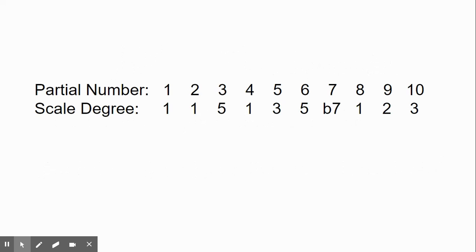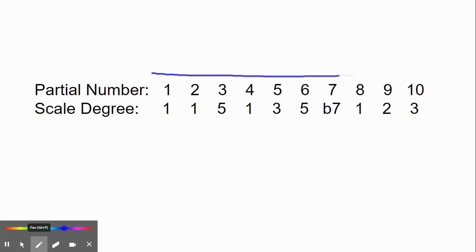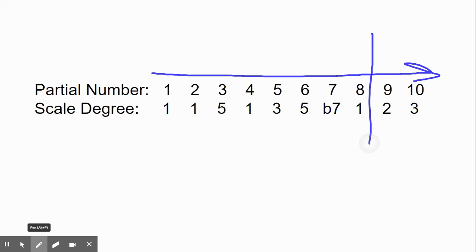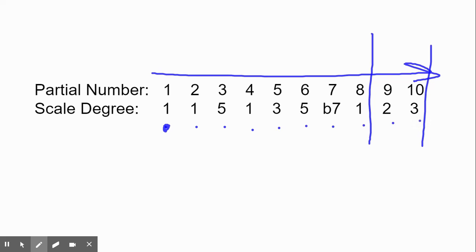We've learned what partials are. Partials are numbered from 1 and above. You can go past 10 if you want to — we're just going to 10, and most of the time you can get away with going to 8. The scale degrees give us the pitch no matter what key we're in, as long as you memorize the numbers: 1, 1, 5, 1, 3, 5, flat 7, 1, 2, 3. Those are our scale degrees.